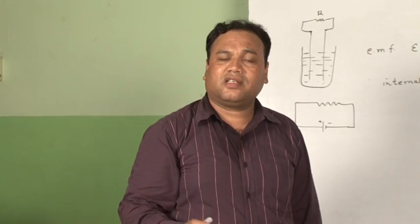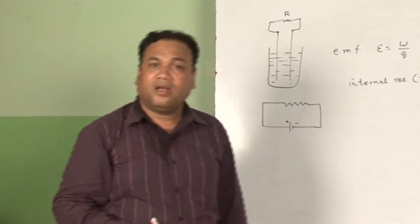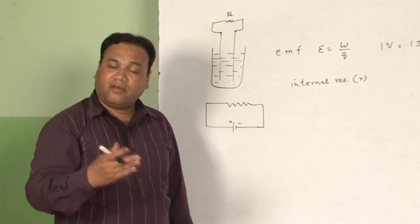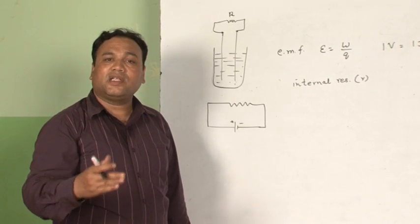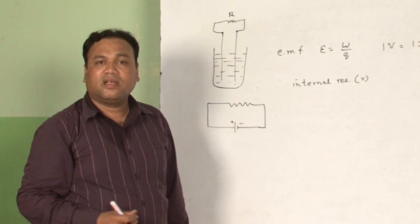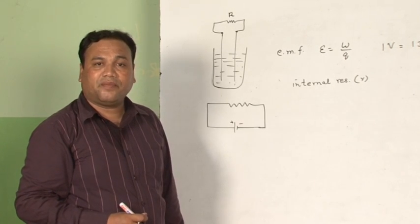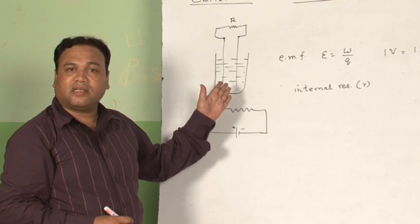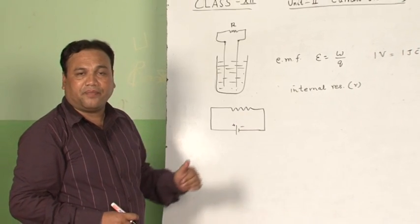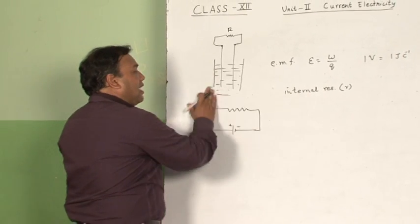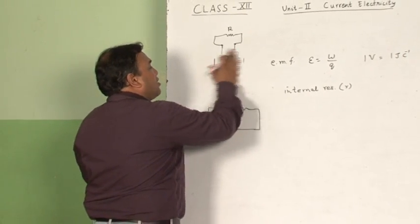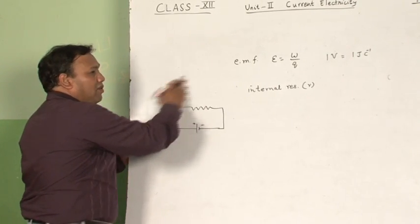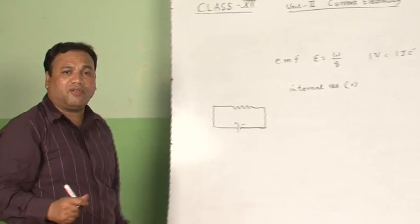This internal resistance has a very small value. A freshly prepared cell has low internal resistance. When you go on using it, its internal resistance goes on increasing continuously because various reactions are taking place inside the cell. The cell is also called the source of EMF — it is the seat of EMF — because of that only current flows through the circuit.